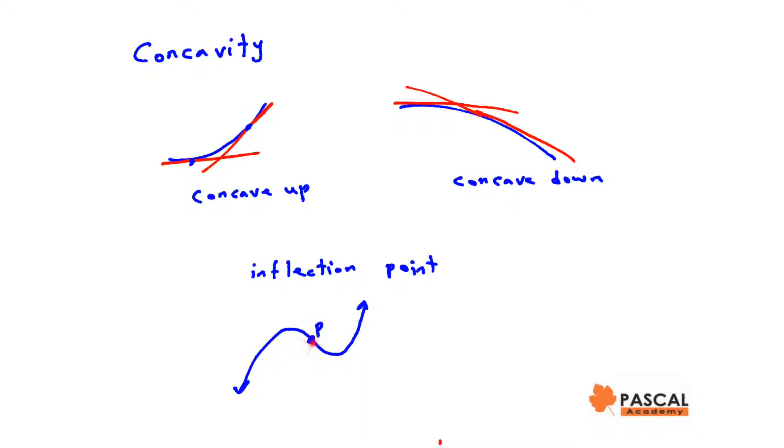f is called point of inflection if the function is continuous at p and concavity of the graph changes at that point. For example, in this graph, concavity changes at p. Before p it is concave down and after p it is concave up.